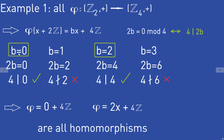The two values of B that fulfill the condition are B = 0 and B = 2. So the two homomorphisms from Z_2 to Z_4 are phi = 0 + 4Z and phi = 2x + 4Z. These are all the homomorphisms from Z_2 to Z_4.